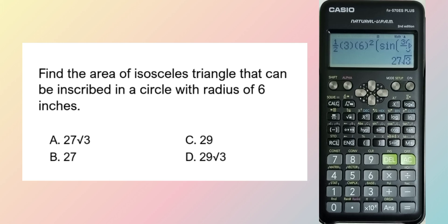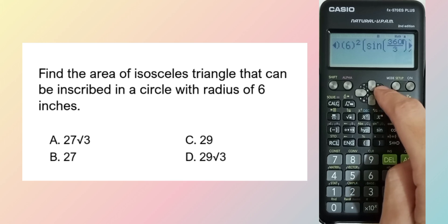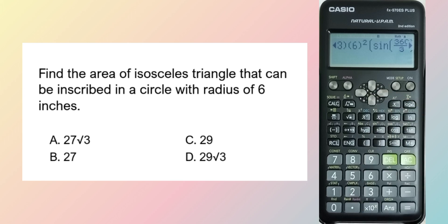Again, the formula for finding the area of any regular polygon inscribed in a circle is equal to 1/2 times the number of sides (n) times the square of the radius (r²) times sine of 360 divided by n. So that's it.